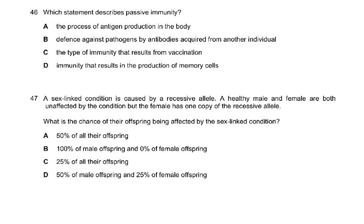Which statement describes passive immunity? Passive immunity is ready-made antibodies. Antigens are on the microorganism — on the bacteria or virus entering the body. The answer is B: defense against pathogens by antibodies acquired from another individual. Passive immunity occurs mother to fetus — the mother's lymphocytes make antibodies that cross the placenta or pass in breast milk. Vaccination is artificial active immunity. In passive immunity there is no antigenic exposure and no memory cell formation.